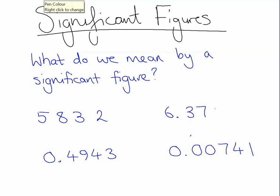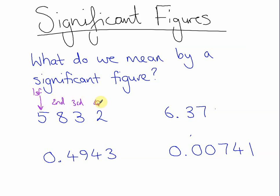So here we have 5832. When I look at the 5, I can see that it is in the thousands column, so I know this number is in the thousands, and then I've got the hundreds, the tens and the units. So that 5 has a very significant role in telling me the size of this number. So this is the first significant figure, then we have the second, then the third, and then the fourth.